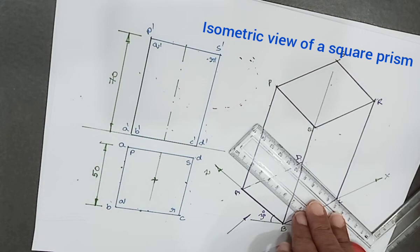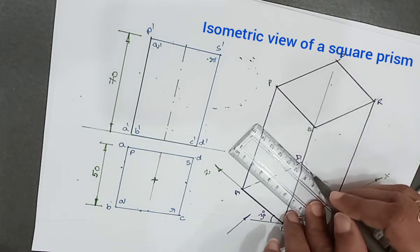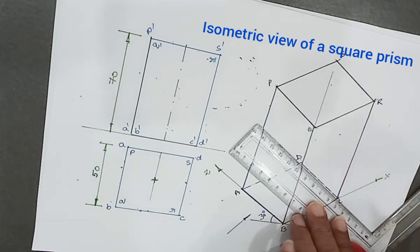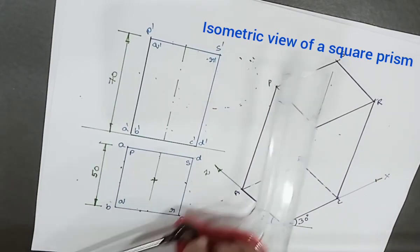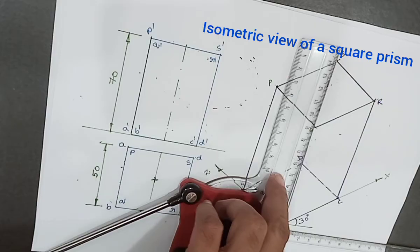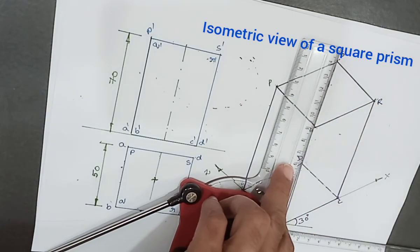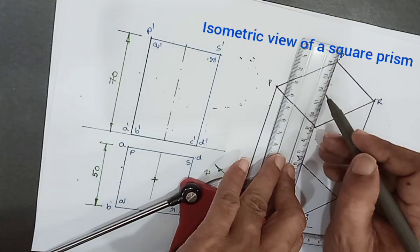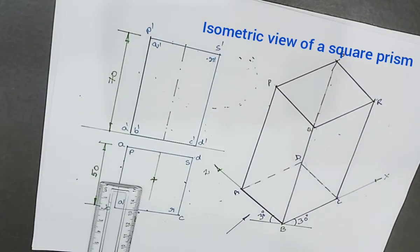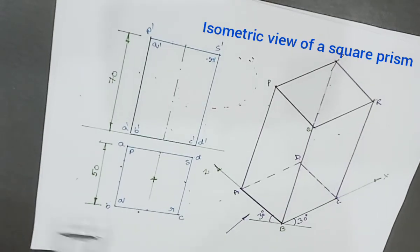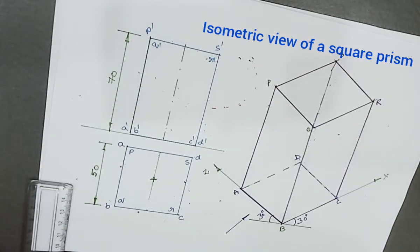This base is visible but it's hidden, so it's dotted. Even CD is also dotted. Then this portion of the face edge is also dotted, and this portion of the face edge is also dotted.